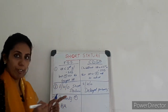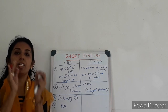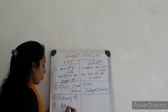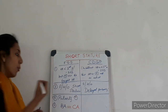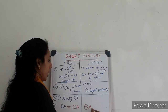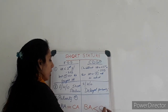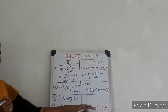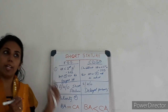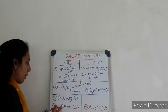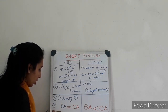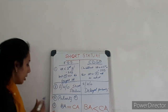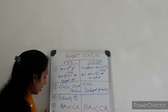Now in familial short stature, the skeletal maturation is normal. So bone age will be equal to chronological age. Whereas in CDGP, the bone age is delayed — bone age is less than the chronological age.